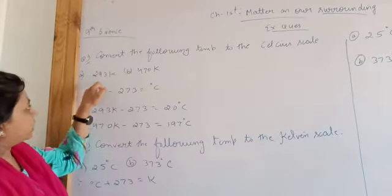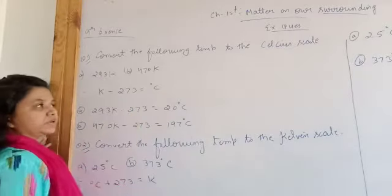So first we write that 293 Kelvin. Now, we can convert the following temperature to Celsius.